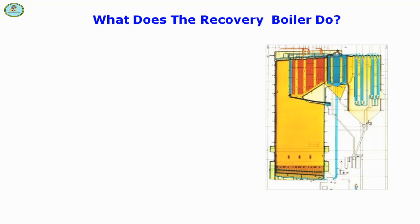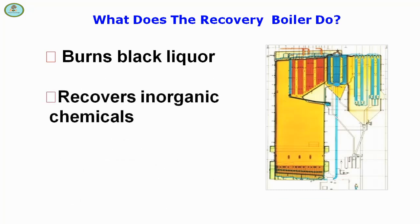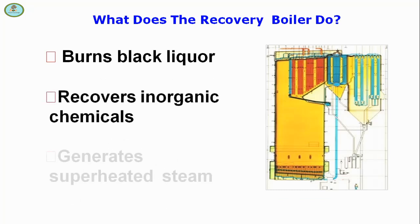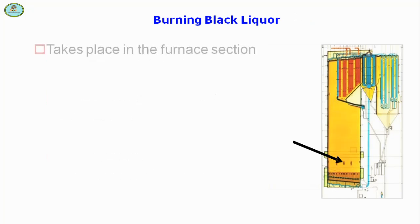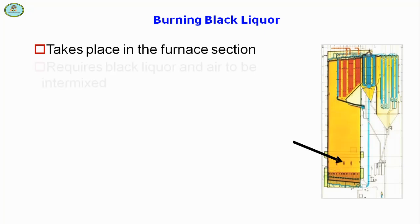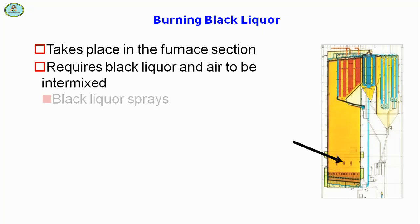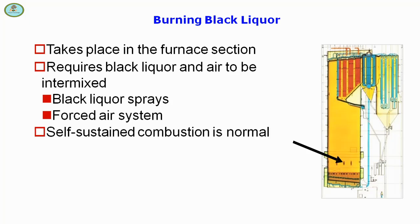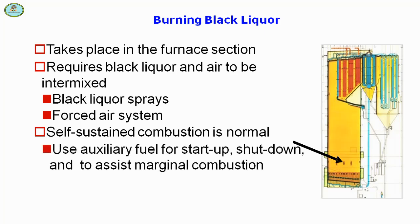The recovery boiler functions to burn black liquor, recover inorganic chemicals, and generate superheated steam. Burning black liquor takes place in the furnace section, requiring black liquor and air to be intermixed. Black liquor sprays and forced air systems enable self-sustained combustion. Auxiliary fuel is normally used for startup, shutdown, and to assist marginal combustion. Combustion gas flow is driven by an induced draft fan.